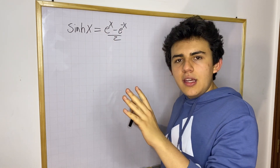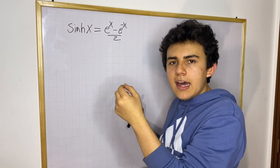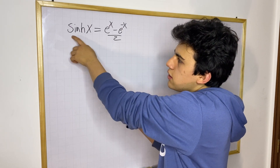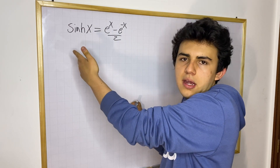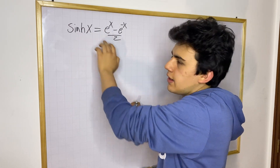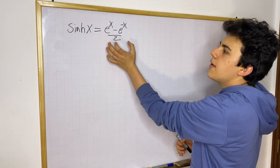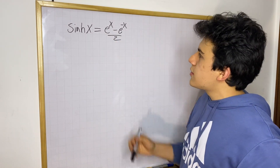Sinh is how you pronounce this function. You basically add a 'c' into the way in which you write the function — this is sinh(x), and sinh(x) equals that expression, using Euler's number.